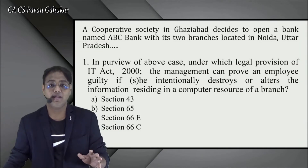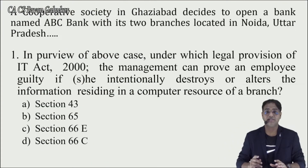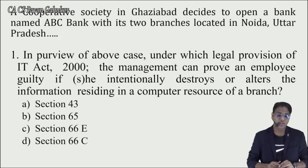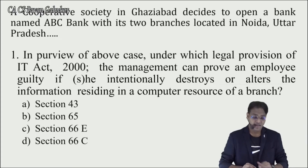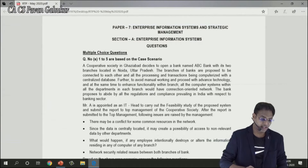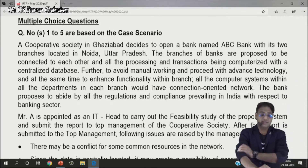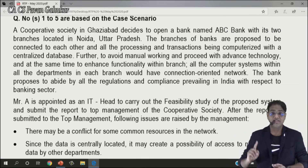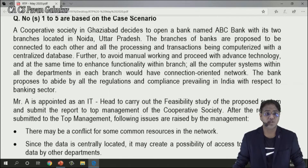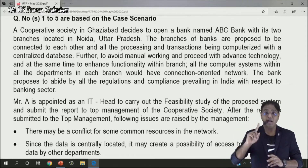The case study is basically about a cooperative society in Ghaziabad that decides to open a bank named ABC Bank, with two branches located in Noida, Uttar Pradesh. This is EIS Section A MCQ — a cooperative society bank case study. Of course, this is more related to the core banking system chapter.